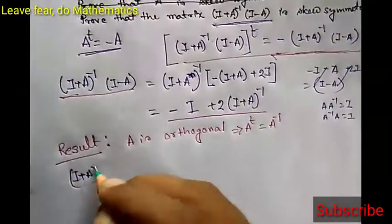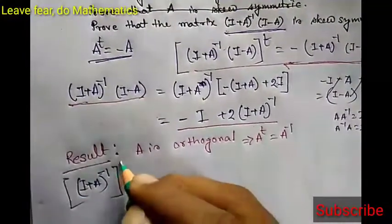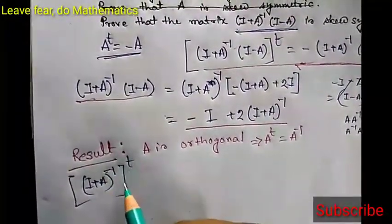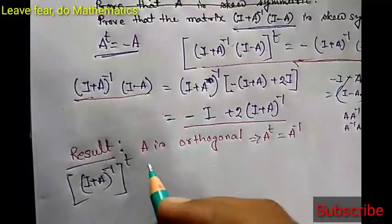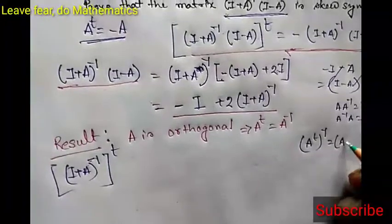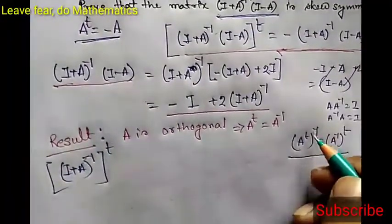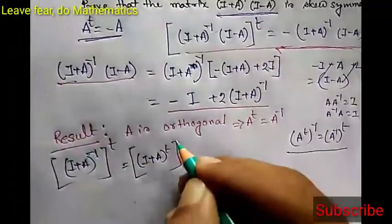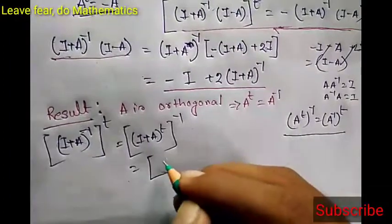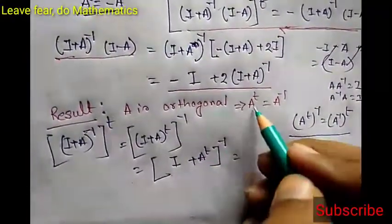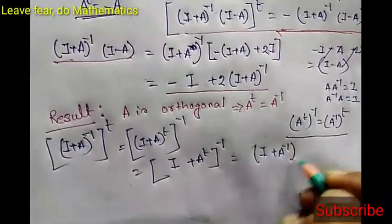Now how can we write (I plus A) inverse whole transpose? We will apply the result that A transpose inverse equals A inverse transpose. So (I plus A) inverse transpose equals (I plus A transpose) inverse. Since A transpose equals A inverse, this becomes (I plus A inverse) inverse.